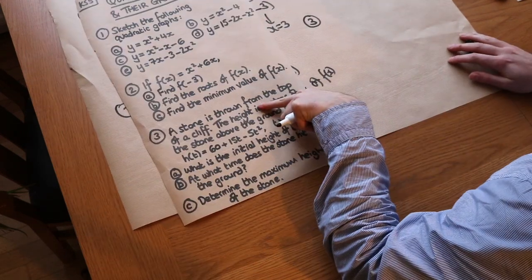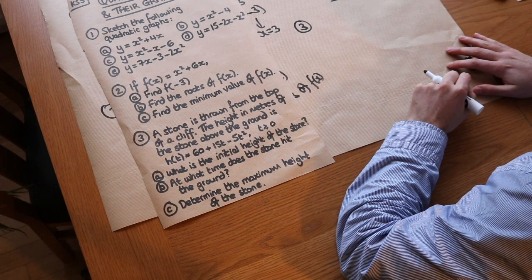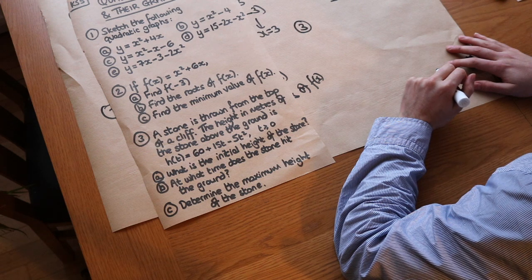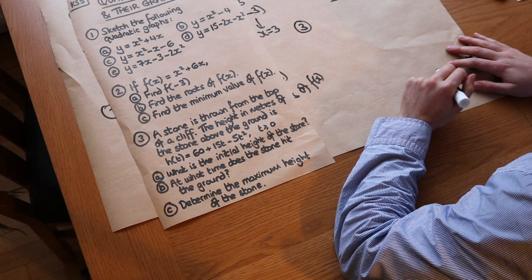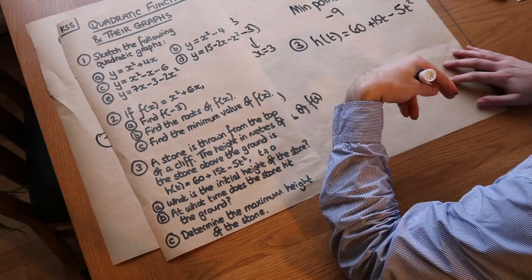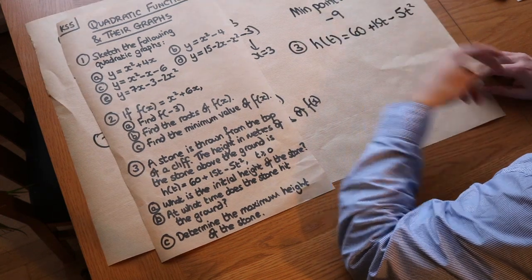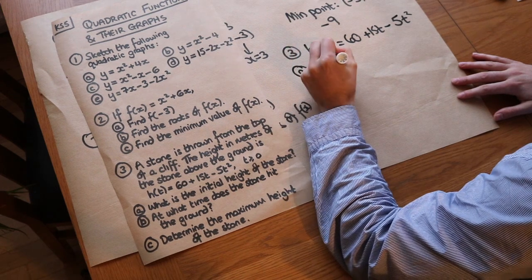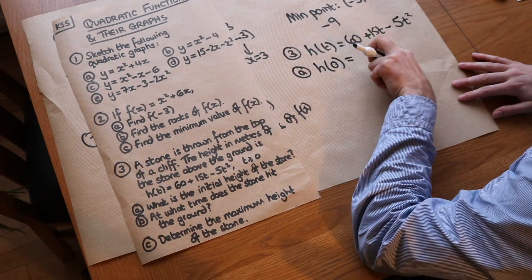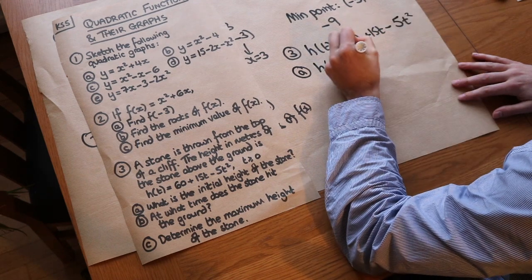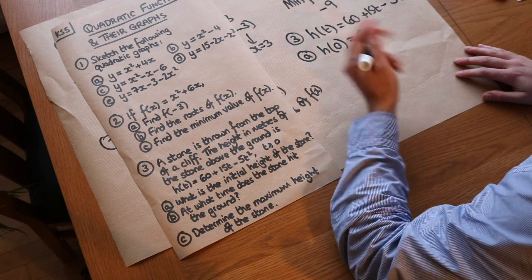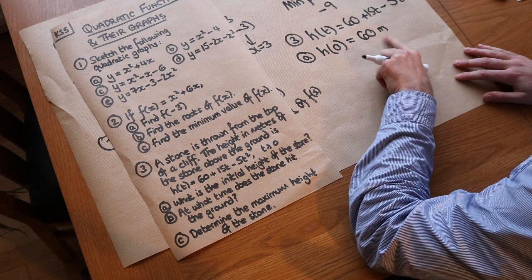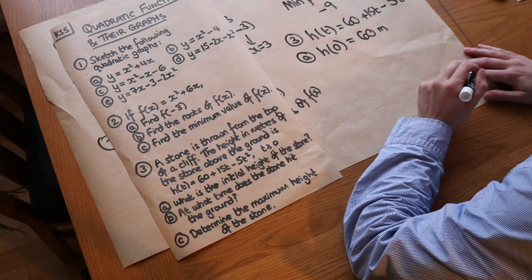Now for the modelling example: a stone is thrown from the top of a cliff. The height in metres above the bottom of the cliff is h(t) equals 60 plus 15t minus 5t squared. For the initial height we make t equal to 0: h(0) equals 60 plus 0 minus 0 equals 60. This tells us the cliff is 60 metres high.